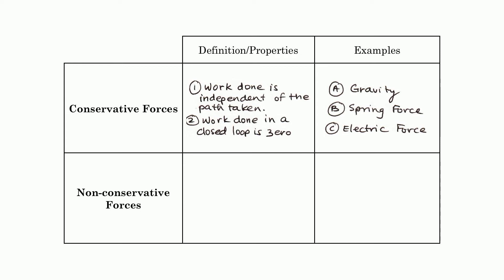Non-conservative forces, though, depend on the path that's taken. A very good example is, if we consider friction, if we have a longer path over which friction is acting, more energy is going to be taken out of the system. And so that is an example of where work that's being done is dependent on the path that's taken. And of course, the two examples that we would say here are friction and air resistance.